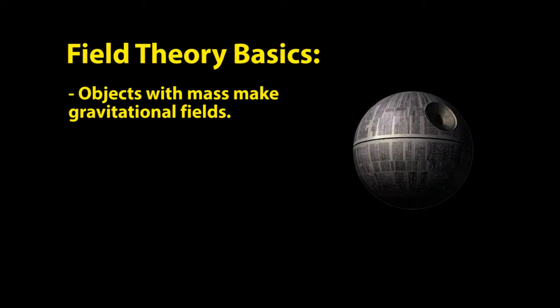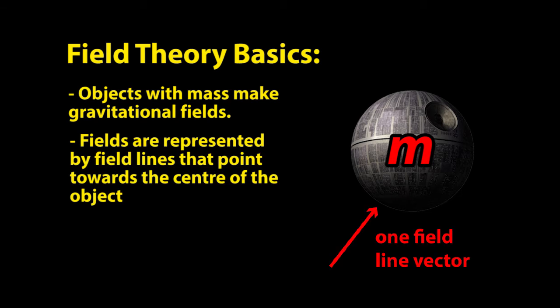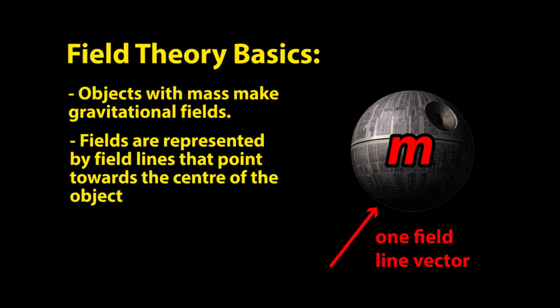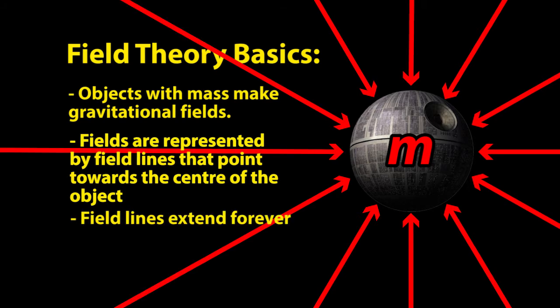Gravitational fields are made by any object that has mass. Fields can be represented by field lines which are vectors but they're kind of special vectors. The field lines always point towards the center of the object making the gravitational field but the field lines extend forever to infinity.